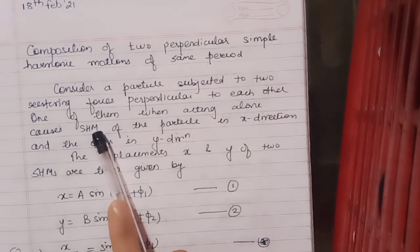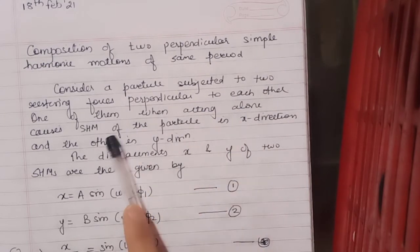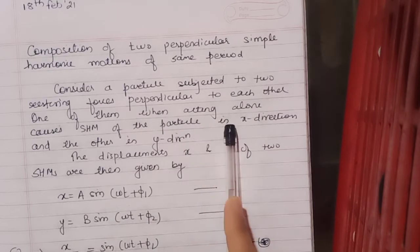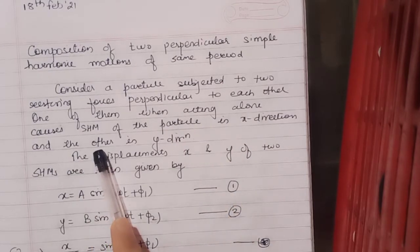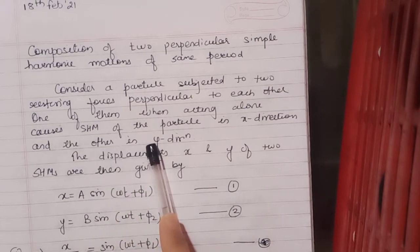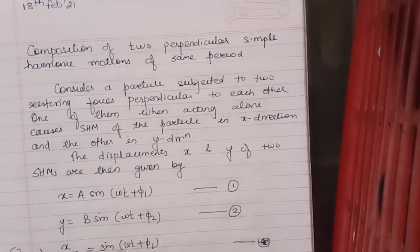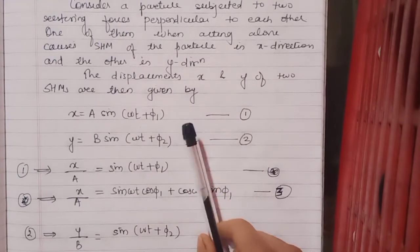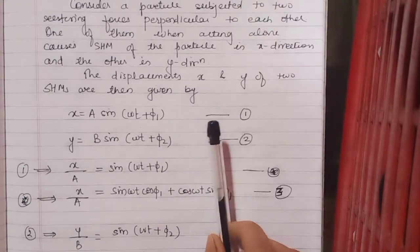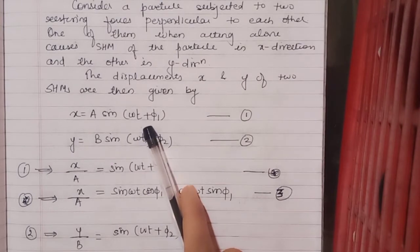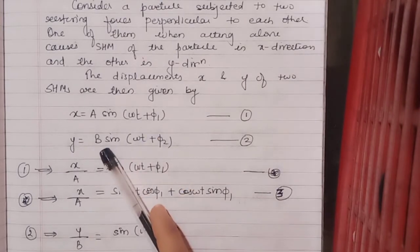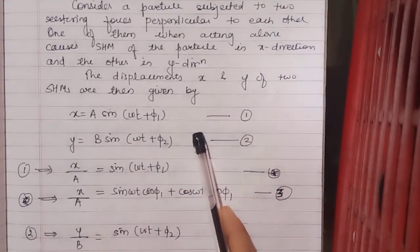If one of them, when acting alone, causes oscillation of the particle in the x direction, then the other, which is acting on that particle, will be in the y direction, because both of them are perpendicular to each other. So the displacements x and y of the two SHMs will be given by: x = a sin(ωt + φ₁) and y = b sin(ωt + φ₂).